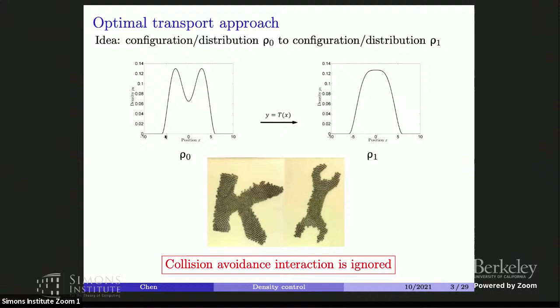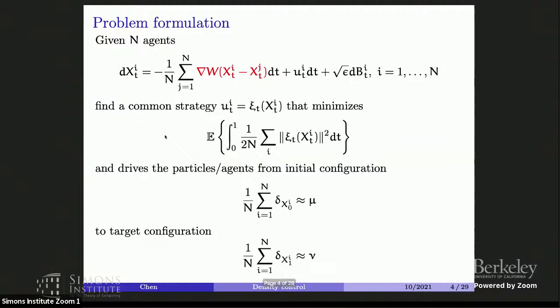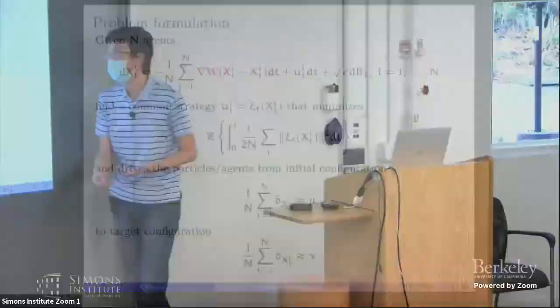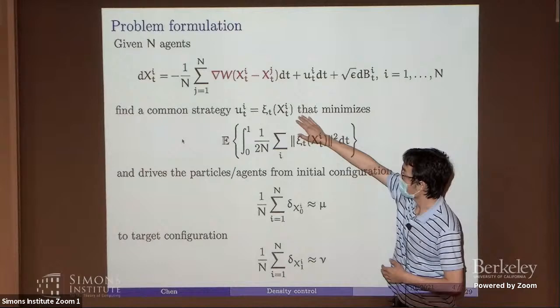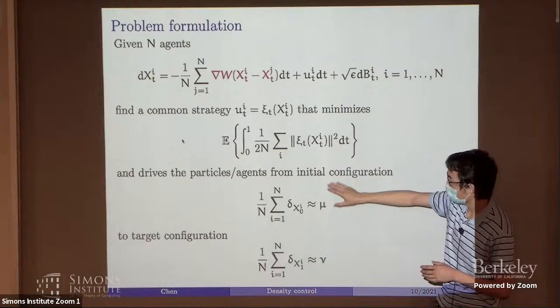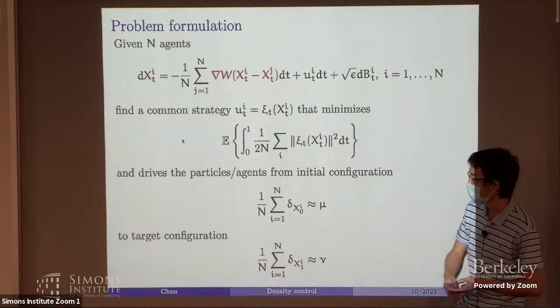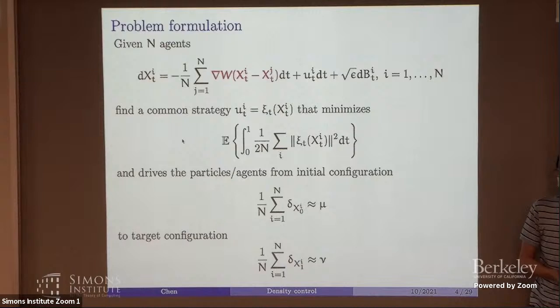More specifically, this is our system. We have agents that share basically the same dynamics. They interact with each other via this interaction kernel, and U is the control for each agent. We also have noise, and if it equals zero this corresponds to deterministic dynamics. Our goal is to find a strategy which is the same for everybody but could be time-varying. If everybody uses this strategy, they would go from the initial configuration — approximately some distribution — to the target configuration, while also minimizing the total effort. That is the problem formulation.